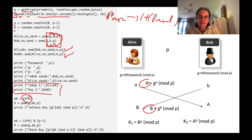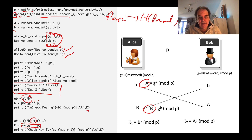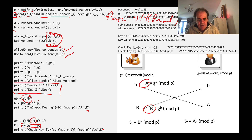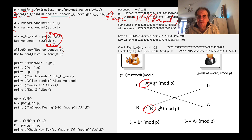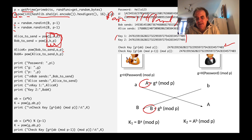We can verify by computing g to the power of a*b mod p directly, and also by computing a*b mod (p-1) as the exponent, then mod p — both should give the same key. In a sample run, we can see the value of g, the prime number, the values being sent, and the shared key matching across all three calculations.